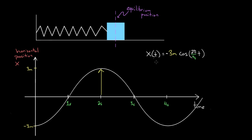Negative cosine starts down here. Note that our amplitude is still three—the amplitude is the magnitude of the maximum displacement, so that's still positive three meters even though it started down here. You include an extra negative out front that goes along with the cosine—that gives you negative cosine, and there's your function.